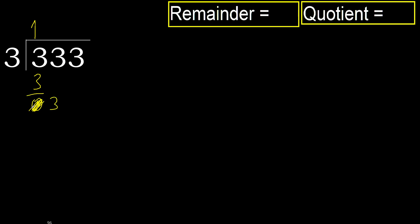Bring down — eliminate 0 on this side. 3. 3 multiplied by 1 is 3 — 3 is not greater, ok. Subtract. Next.